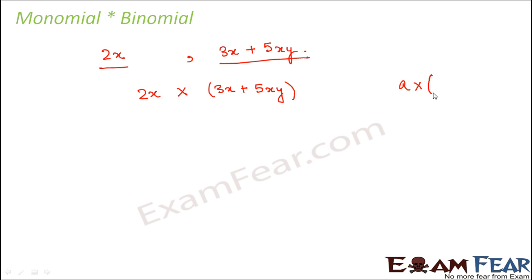So what will you do? We will make use of the distributive law. So we know that as per the distributive law, a into (b + c) is equal to a into b plus a into c. So in this case, 2x is just like a, 3x is just like b, and 5xy is just like c.